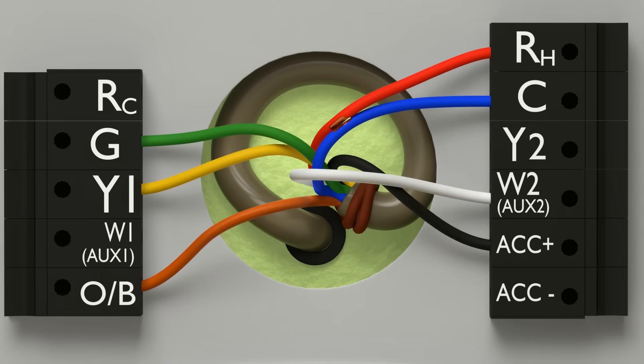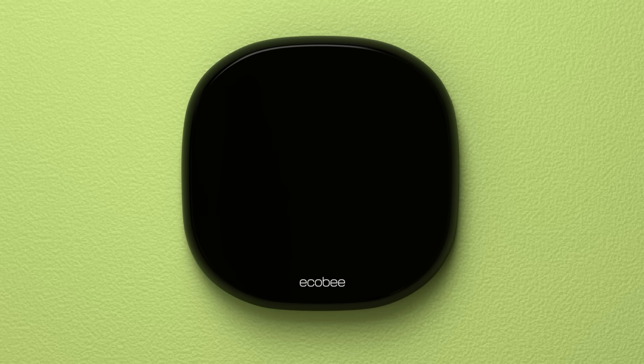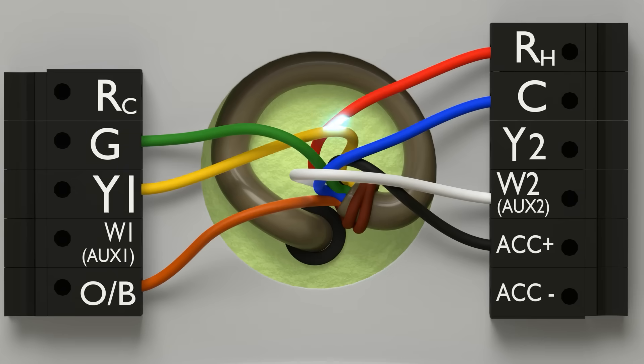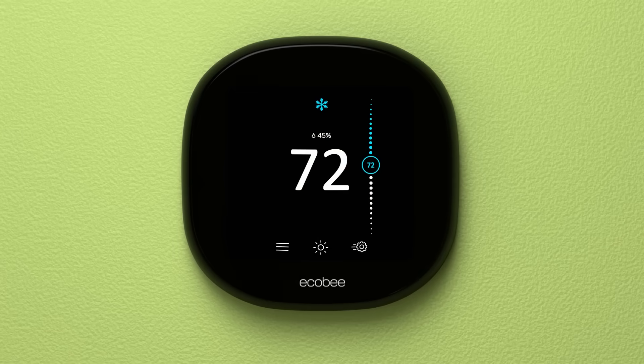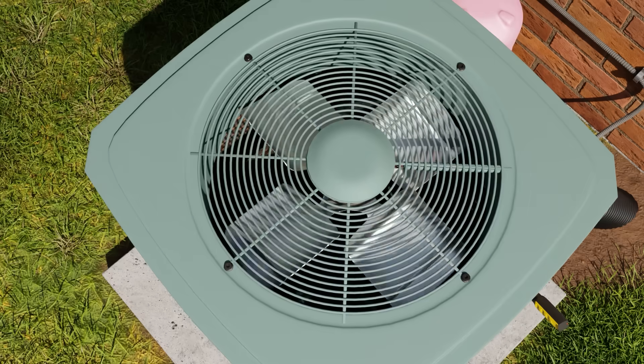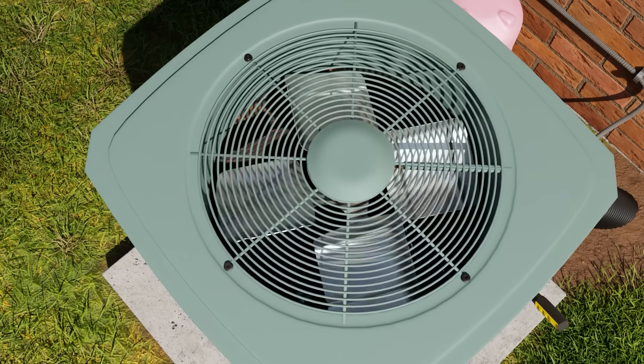Here we show another type of dead short from hot to common, resulting in a blown fuse and a blank thermostat. Here we show a connection between two energized circuits, red and switch leg yellow, going to the contactor. In this case, the red will power the yellow all the time, and the system will run constantly.